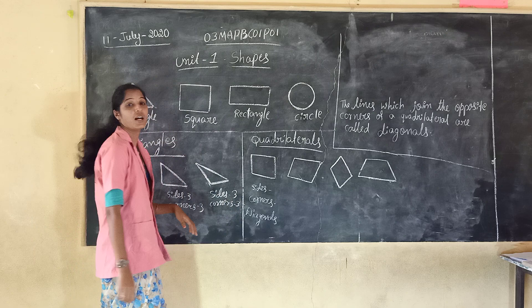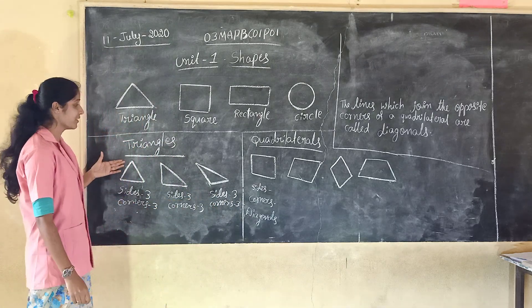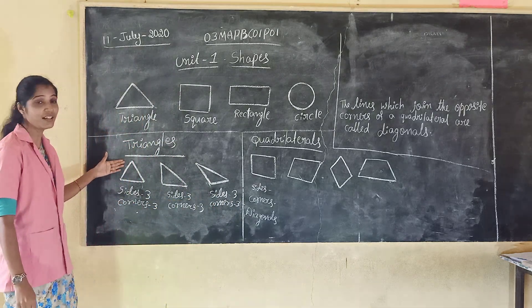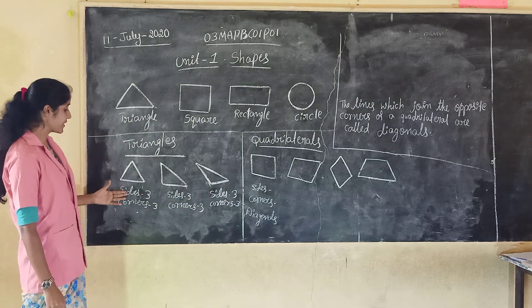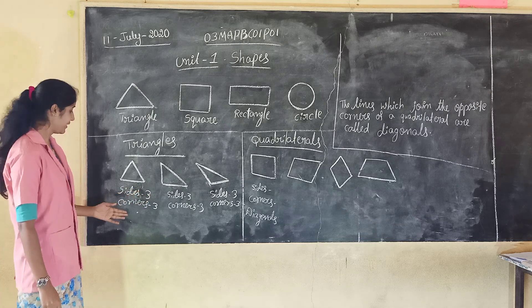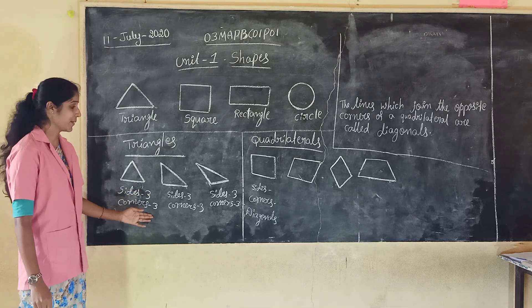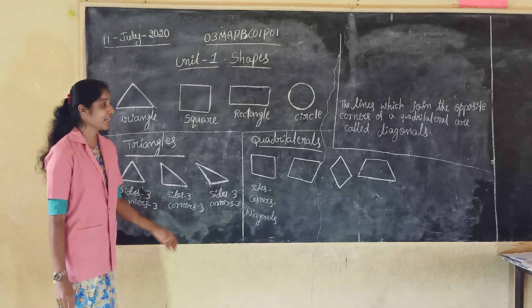Okay, understood? In the triangle, total sides: three. And corners: three.